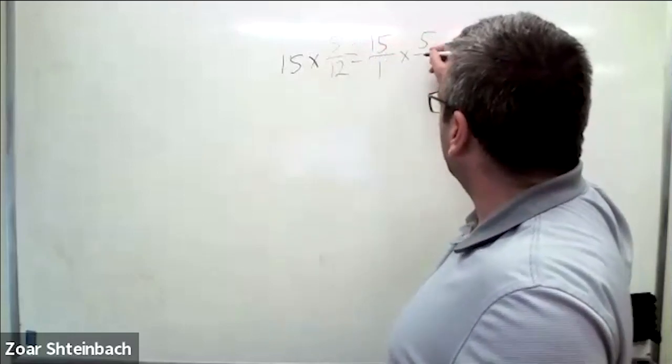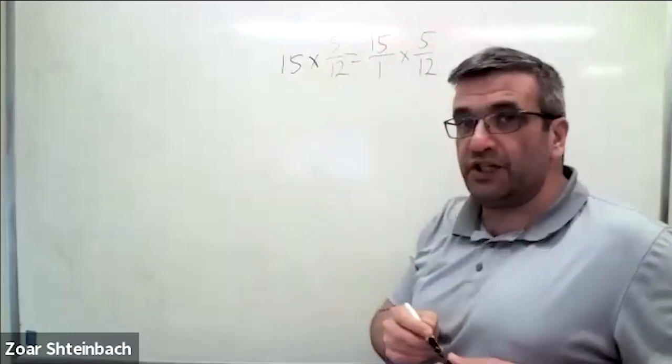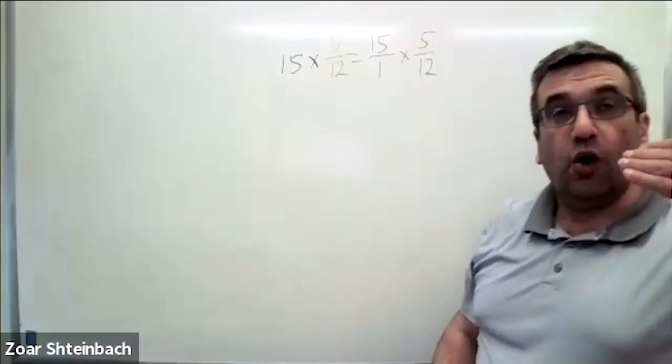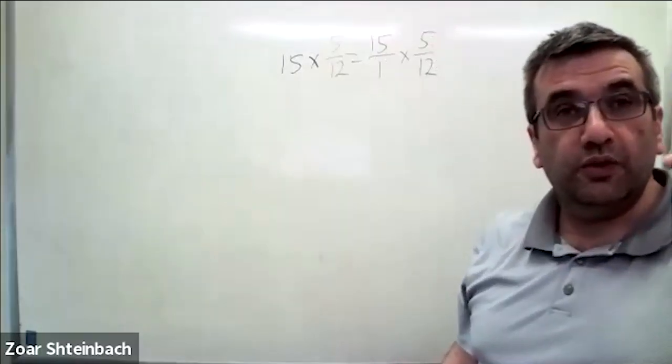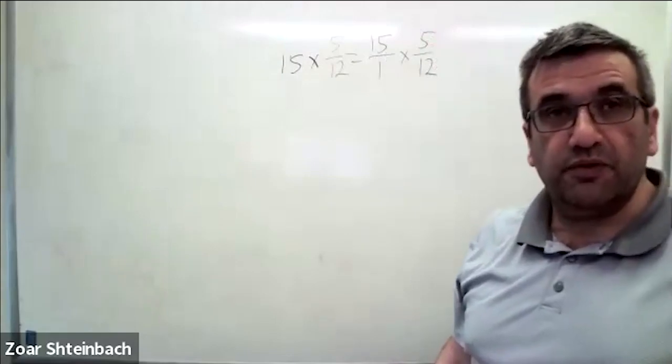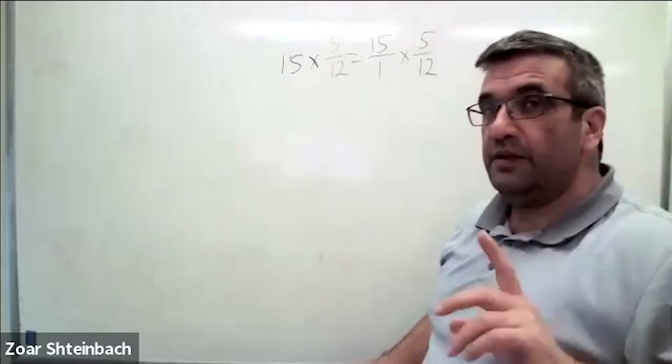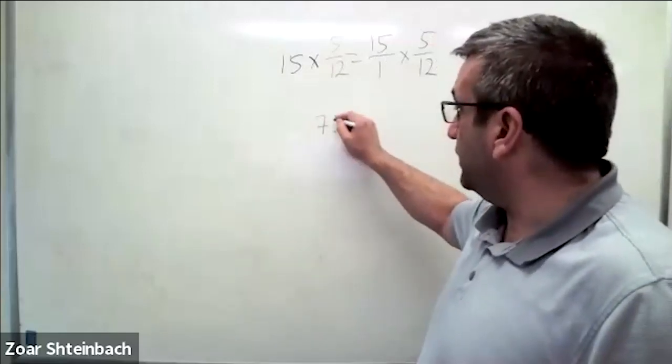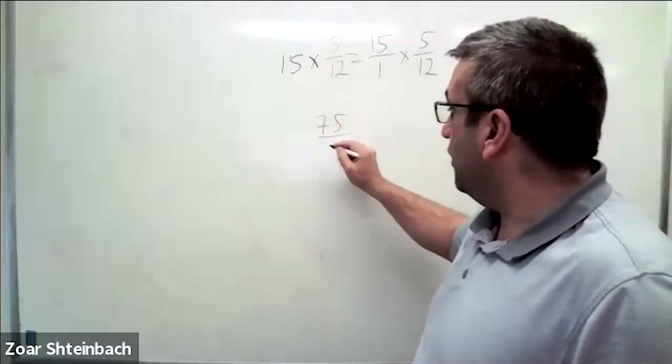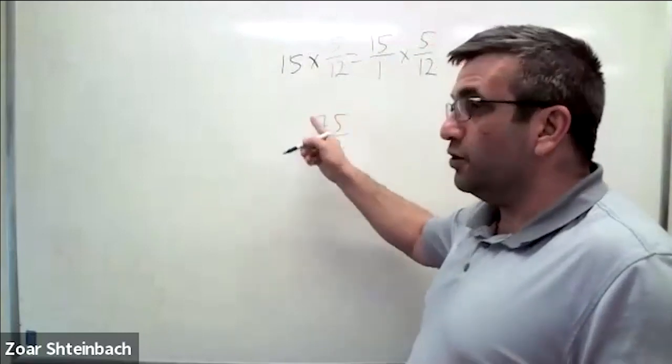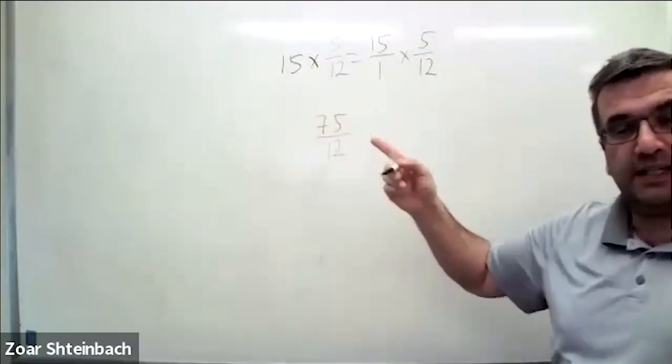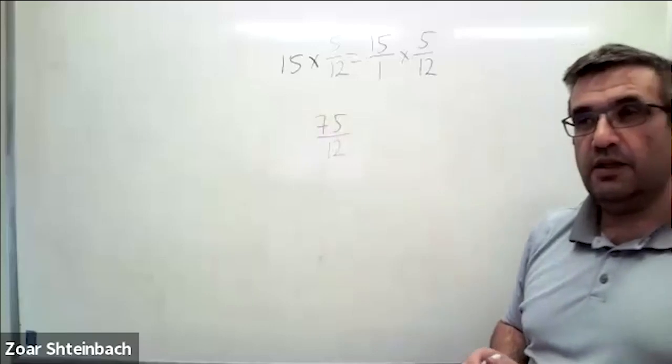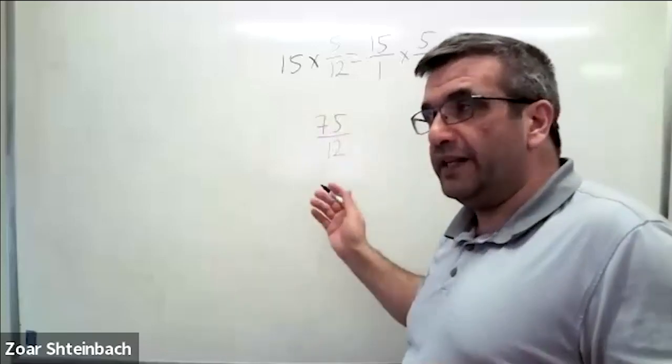Now we have multiplication of two fractions. What you do is simplify your fractions before you multiply. Because what you did before, you multiplied and you got 75 over 12. So you deal with bigger numbers and it's harder to find common factors between numerator and denominator.